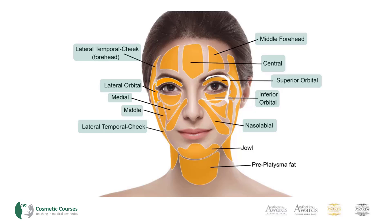The infraorbital, medial cheek and nasolabial fat compartments combine to form the malar fat pad. The malar fat pad is triangular in shape with the base parallel to the nasolabial fold. It is loosely attached to the deep plane and the superficial muscular aponeurotic system, but is firmly attached to the skin and is responsible for the prominence of the cheek.